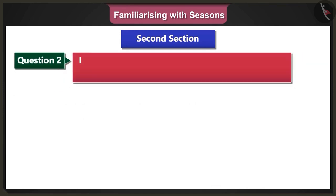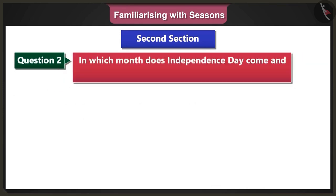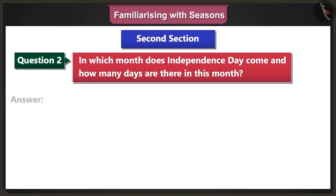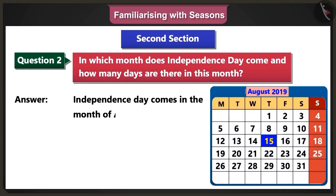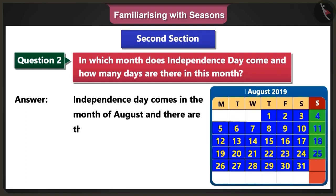Second question: In which month does Independence Day come, and how many days are there in this month? Answer: Independence Day comes in the month of August, and there are 31 days in this month.